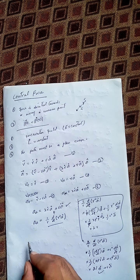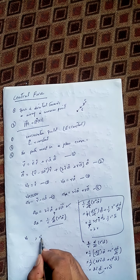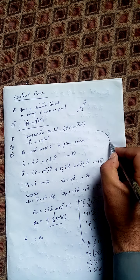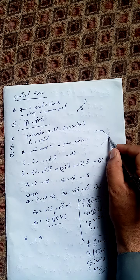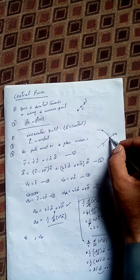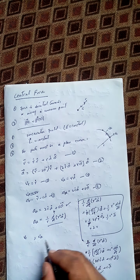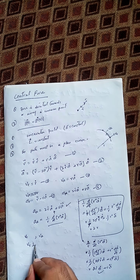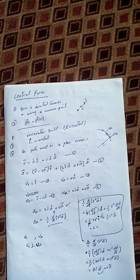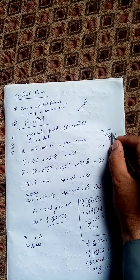Now the velocity has two components: v_r, the radial component, and v_θ, the tangential component. Suppose we have a particle moving from one point to another — the velocity has these two perpendicular components, v_r and v_θ, where the angle between them is 90 degrees.